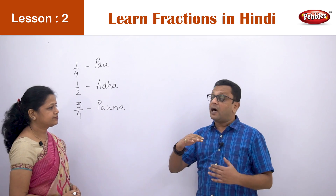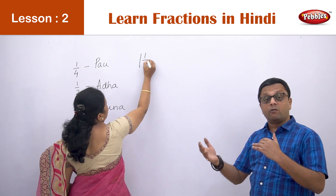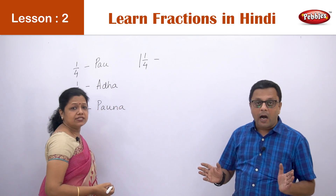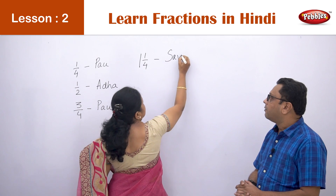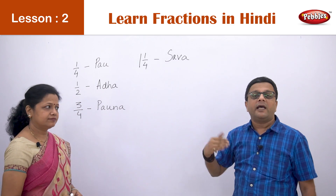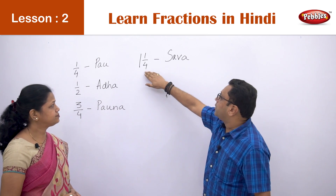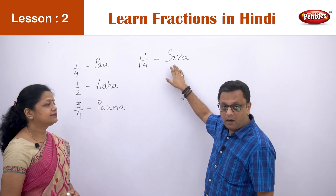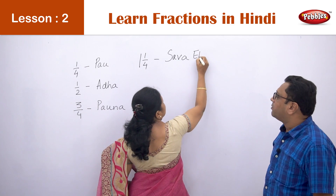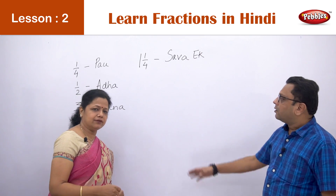But suppose it is after one — let us see what it will be called. Now one and one-fourth together: what is it called? It is 'Sawa.' Generally the one behind it is not pronounced, so we call it just 'Sawa', but if you want to say it properly you can call it 'Sawa Ek.' Some people say 'Sawa Ek' but generally people just say 'Sawa.' Now one and a half is called 'Dedh.'